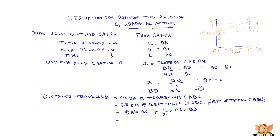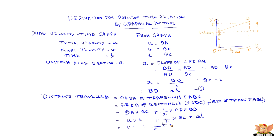From the graph we know OA is u and OC is T. So half into AD is T and BD is aT from equation 1. This gives us UT plus half T into aT.